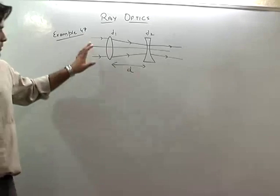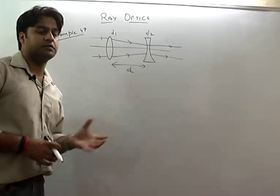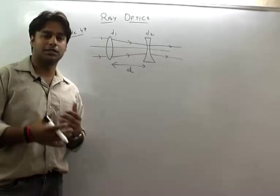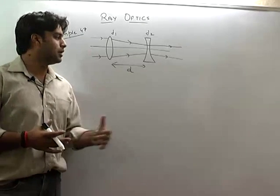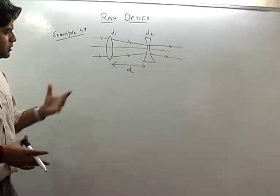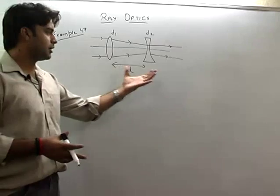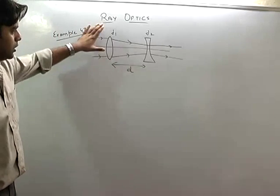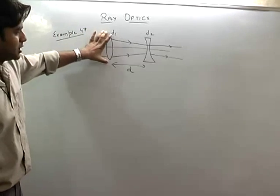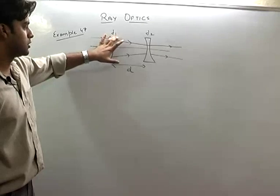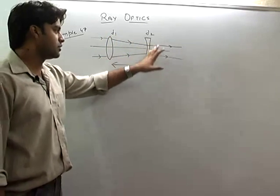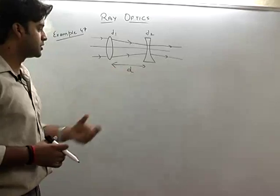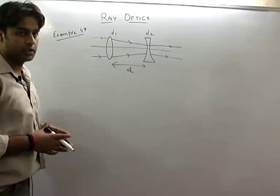Now let us see example number 47. I will tell you a shortcut method which you should understand and analyze yourself. There is one convergent lens of focal length f1, and one divergent lens of focal length f2, separated by distance d. They asked: how much distance d should be between them so that rays parallel to the principal axis emerge as parallel rays?